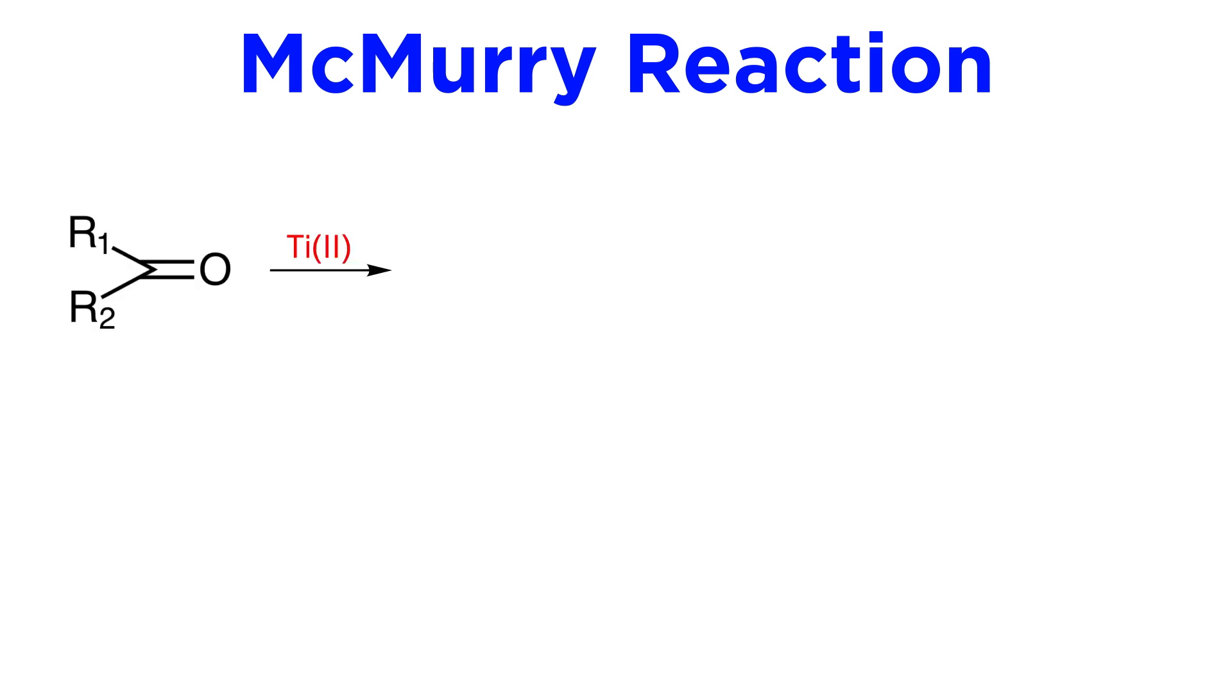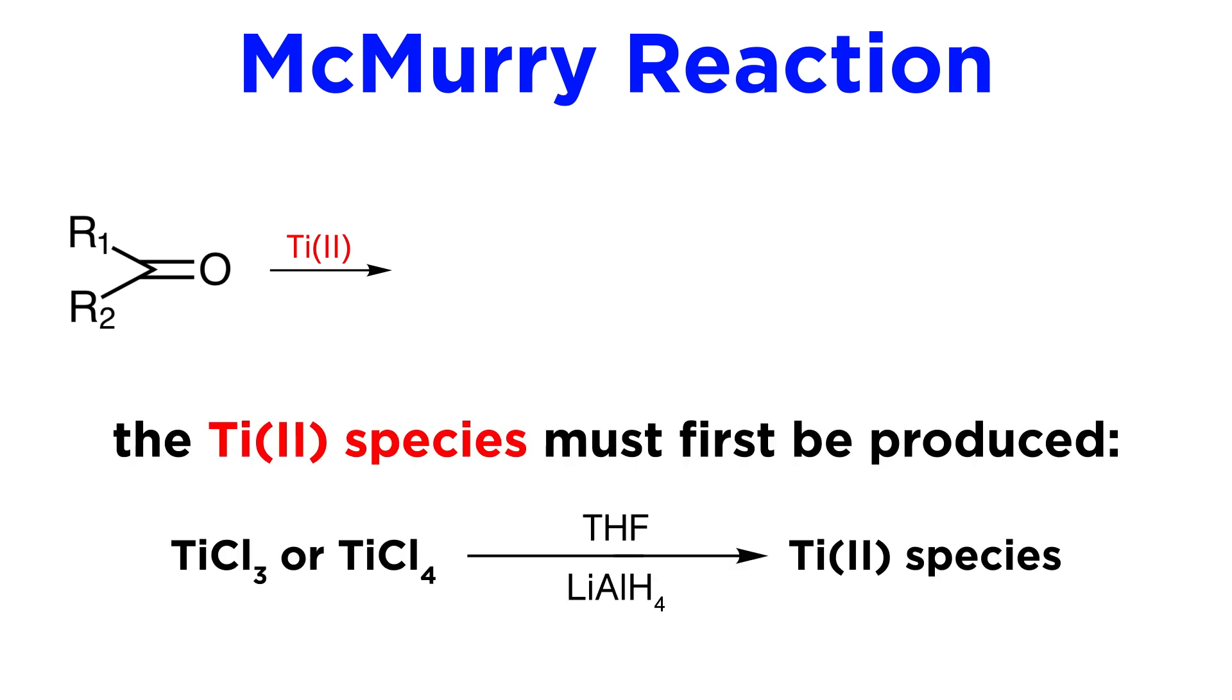The reagent is usually a low-valent titanium species, which is generated in situ by some reducing agent. The first step indeed involves reducing titanium trichloride, or titanium tetrachloride, in an ether solvent like THF, and under scrupulously anhydrous and oxygen-free conditions. The reducing agent initially used by McMurry was lithium aluminum hydride, but recently other chemists have introduced lithium, sodium, potassium, magnesium, zinc, zinc-copper couple, and other metals.